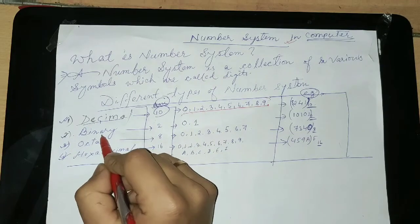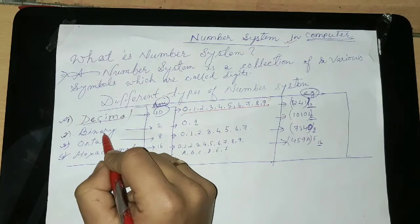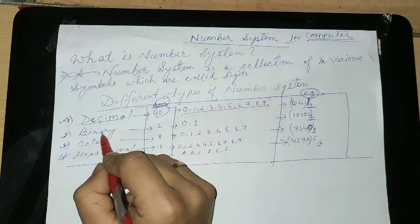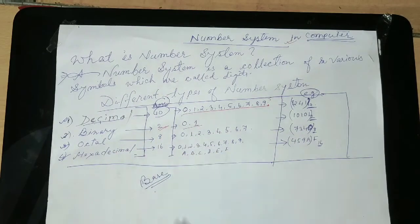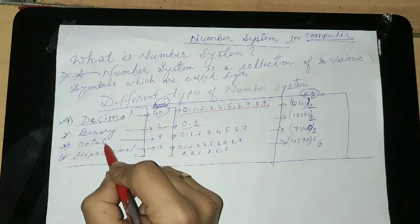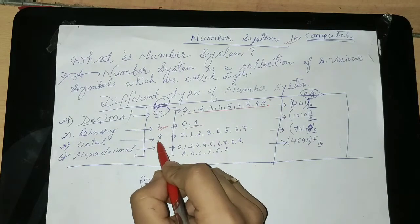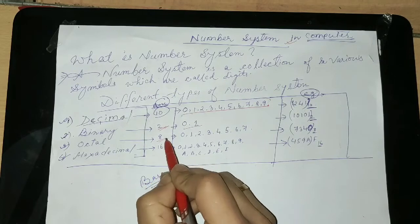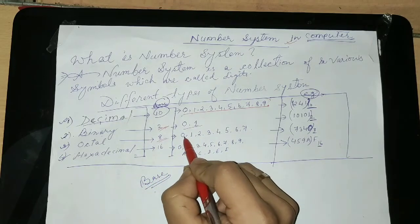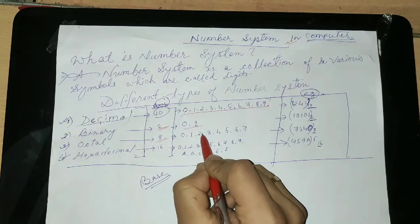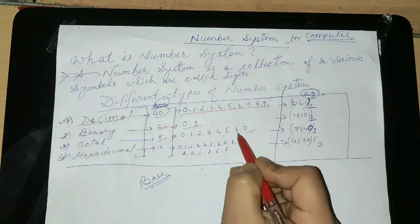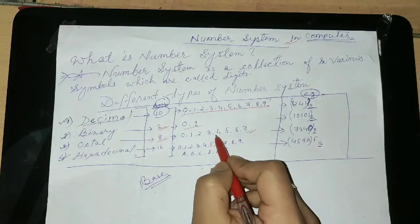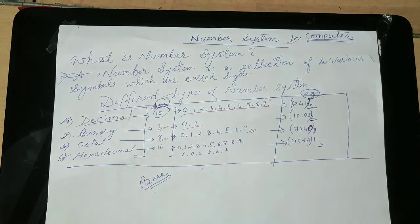Binary — you can call it computer language also. The binary language or binary number system has 2 base, and they are 0 and 1. The third is octal number system. Octal number system has 8 base and they are 0, 1, 2, 3, 4, 5, 6 and 7. These are the 8 base of octal number system.